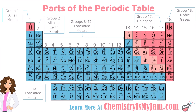Some of the groups on the periodic table have special names, and you should memorize these. The alkali metals are found in group 1. The alkaline earth metals are in group 2. The halogens are in group 17. And the noble gases are in group 18. This center section, made up of groups 3 through 12, are called the transition metals. And those below the table are called the inner transition metals.